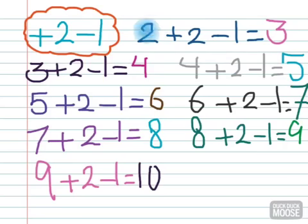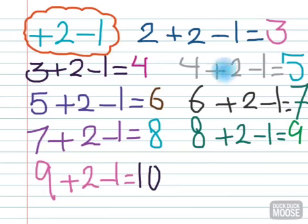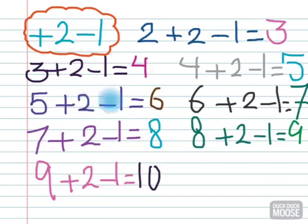So 2 plus 2 is 4. Minus 1 equals 3. 3 plus 2 is 5. 5 minus 1 is 4. 4 plus 2 minus 1 equals 5. 5 plus 2 is 7.